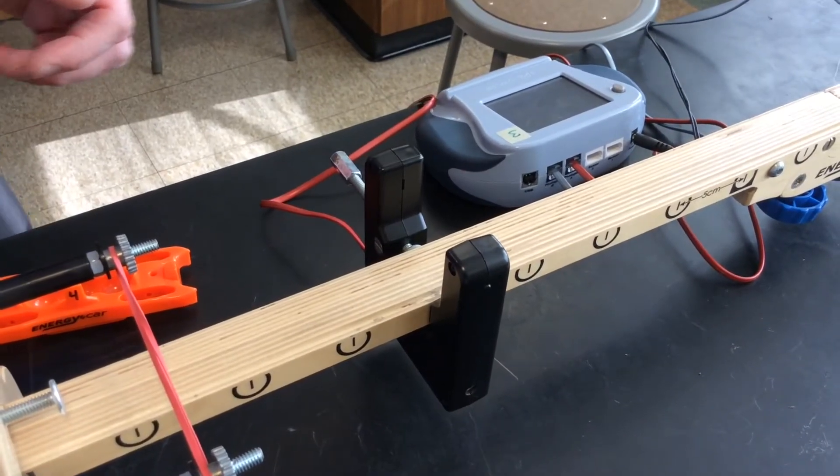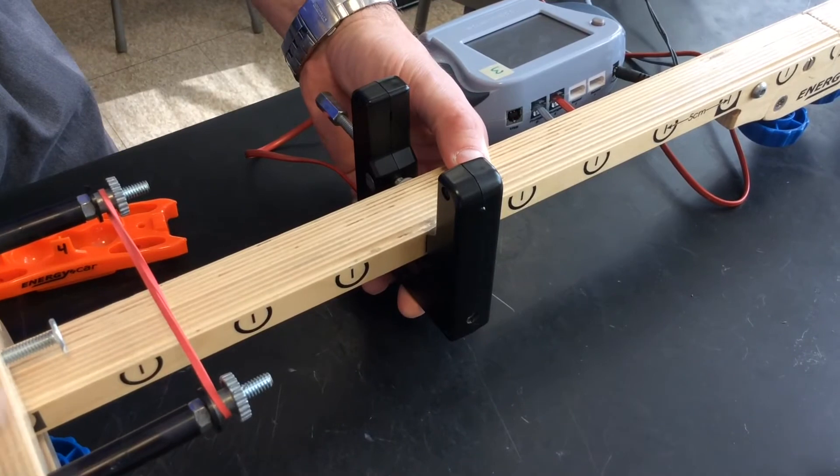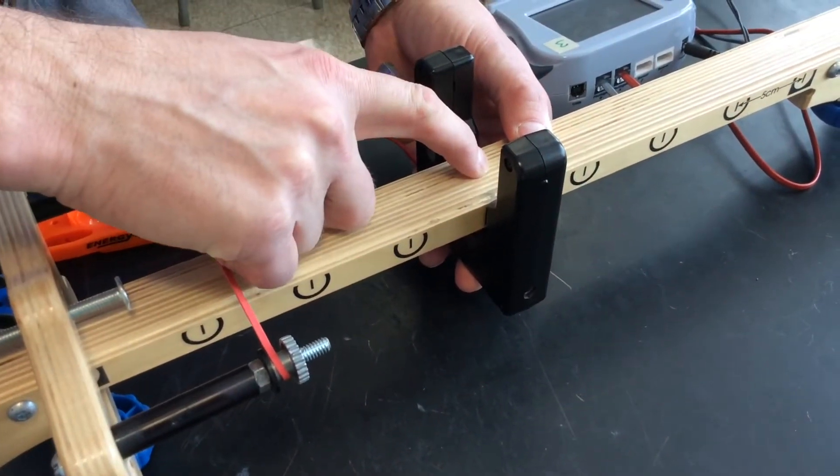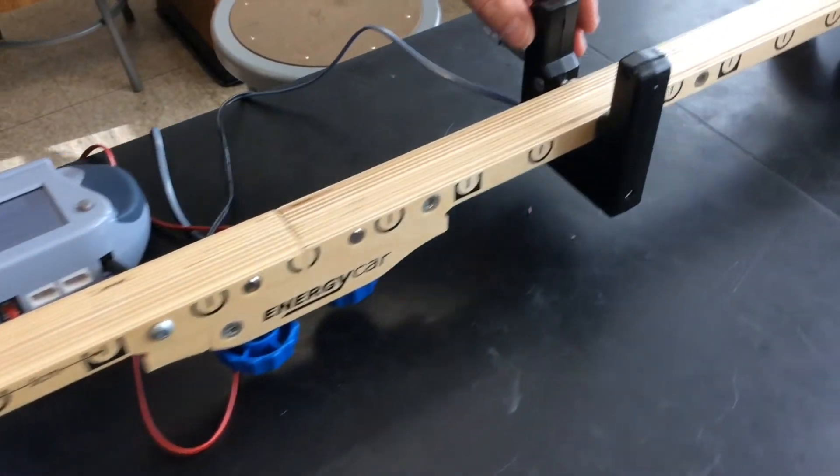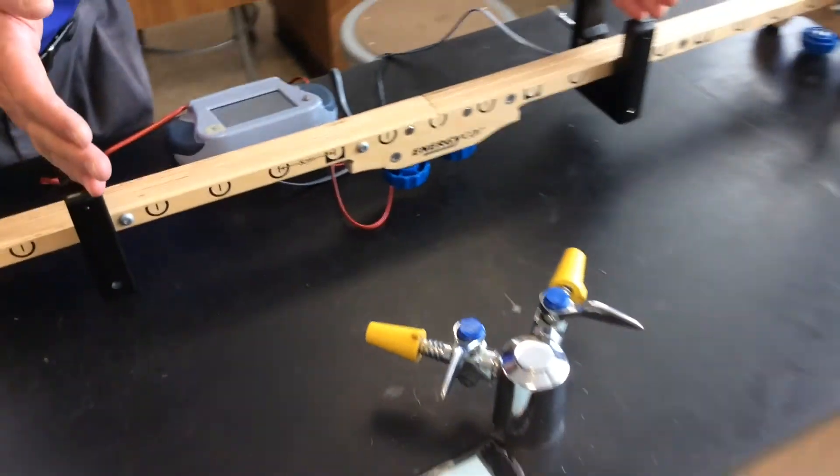Also along with your setup, you want to put your photo gates. The first one should be 20 centimeters from the launch point, so that's four of the circles out. And the second one is going to be 70 centimeters, so there's 50 centimeters between the two photo gates.